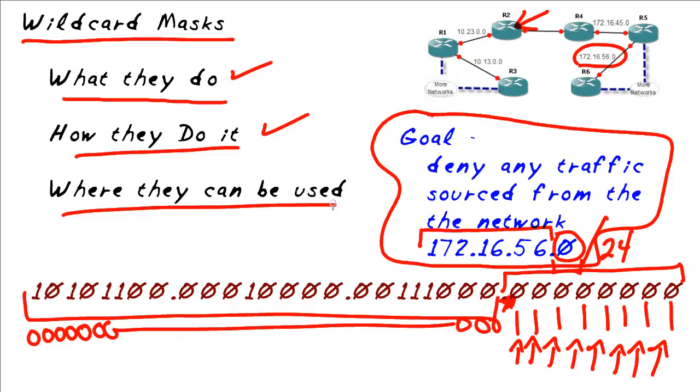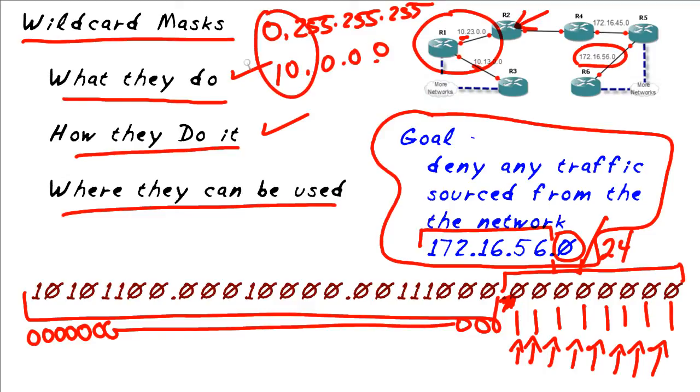Besides an access list, they can also be used in a network statement. So if you want to, for example, on R1, you want to say, I want to include in a routing protocol all the networks, all the interfaces that begin with 10, you can use a wildcard mask of 0.255.255.255. And what that would say is that, okay, the first octet has to be 10 and that has to match, but the last three octets can be anything. And that's one other application where you can use a wildcard mask. I hope this has been informative for you and I'd like to thank you for viewing.